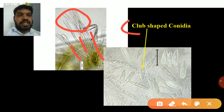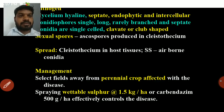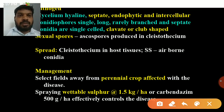The conidia are club-shaped. The mycelium is hyaline, septate, and endophytic — unlike Erysiphe polygoni, which is ectophytic. Leveillula taurica is endophytic and intercellular.